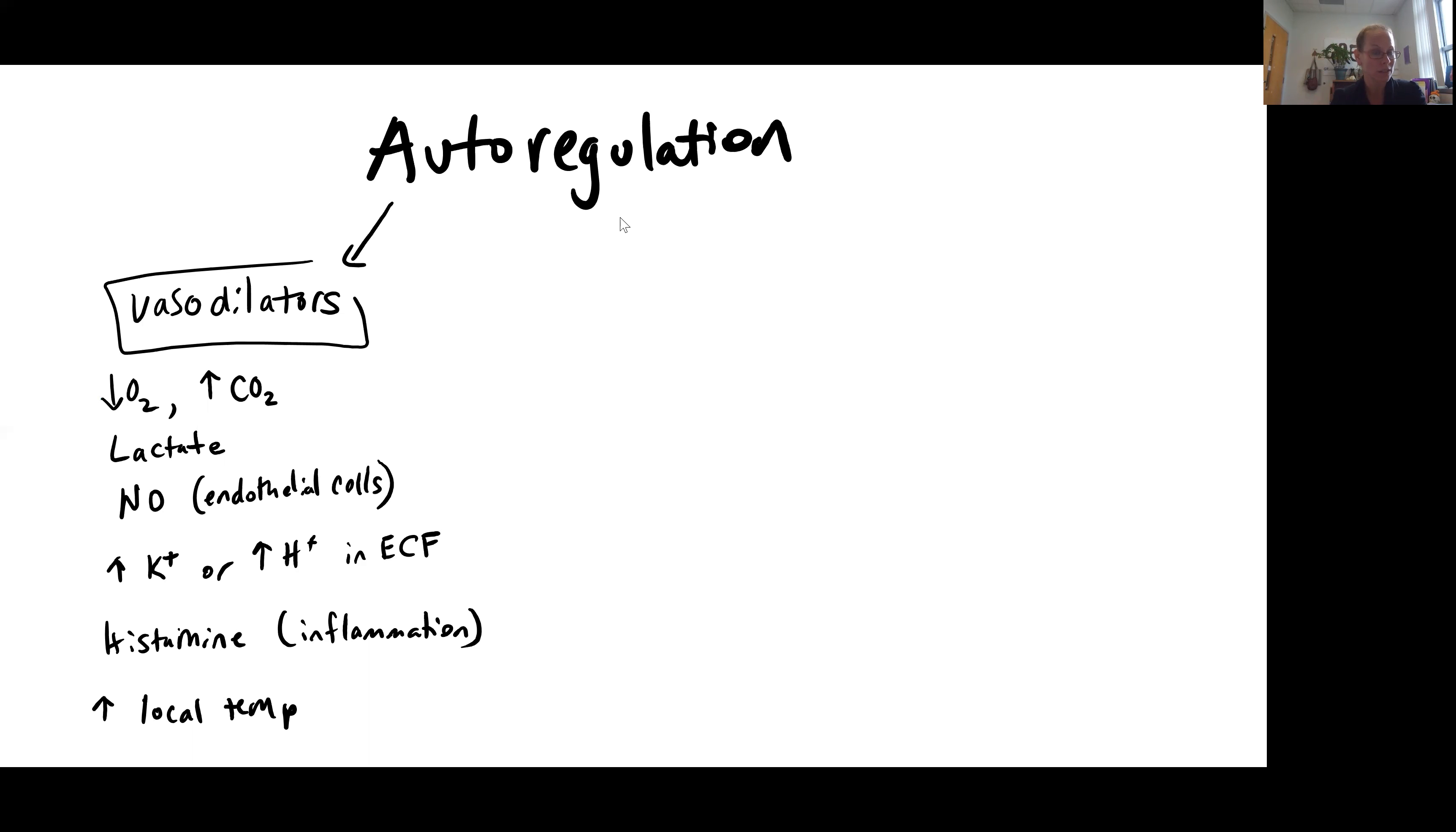So, if you have too little oxygen or too high CO2, the chemical lactate, nitrous oxide, NO, we've talked about it before as BNO hormone, that can be released by endothelial cells. If you have high potassium concentration or high hydrogen ion concentration in ECF, high potassium tells us that we have damage to our cells because potassium should be located inside of the cell. And so, that might be a reason to increase blood flow.